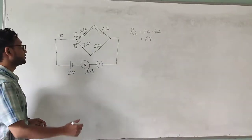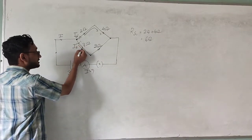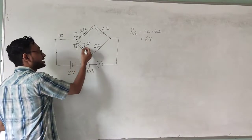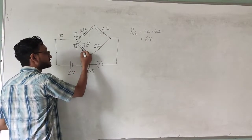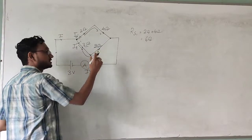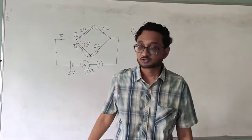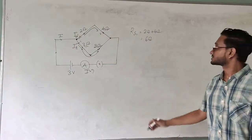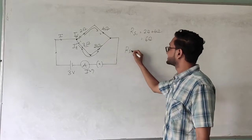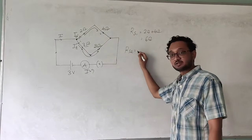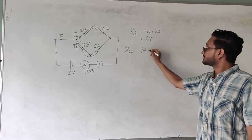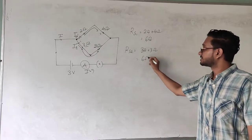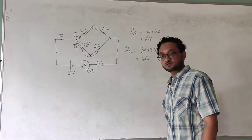Similarly, current I2 flows through the three ohm resistor and then through the other three ohm resistor as well. So these two are also in series. Therefore, resistance RS2 equals three ohms plus three ohms, which gives six ohms once again.